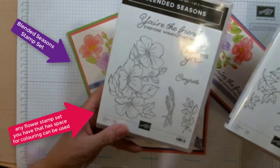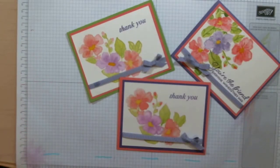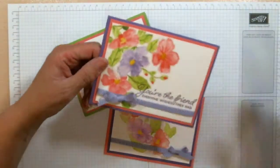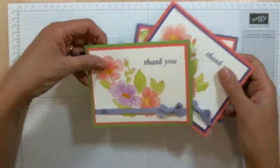I'll use the Blended Seasons stamp set from Stampin' Up. The no-line watercoloring is just that—the outlines of the stamped image get blended into the overall image and you can't see the lines.